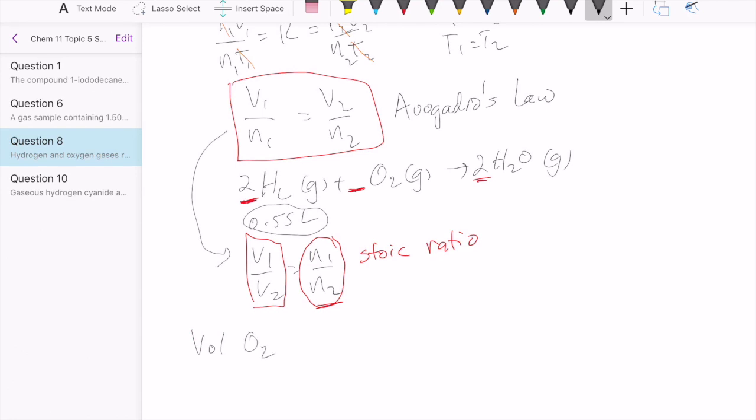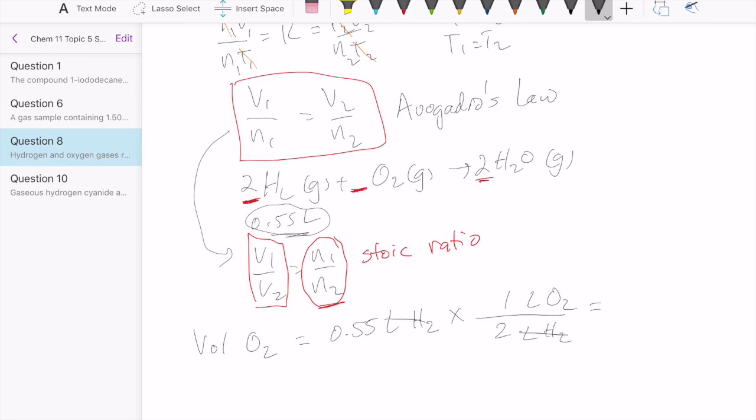Because if I want to know the volume of oxygen I need to react with 0.55 liter of hydrogen, what I need to do is just take 0.55 liter of hydrogen. And I multiply this instead of by the mole to mole ratio, I'm going to multiply by the volume to volume ratio between oxygen and hydrogen. To fill in this number, I'm going to use my coefficients because as we saw, Avogadro's law tells us that the ratio of the number of moles is the same as the ratio of the coefficient. My units cancel out, so I get 0.275 liter of oxygen.